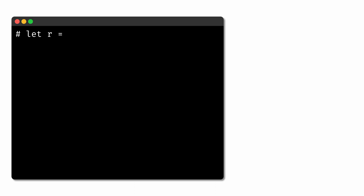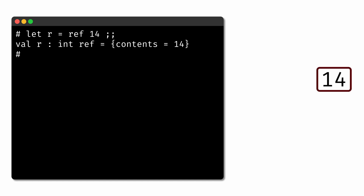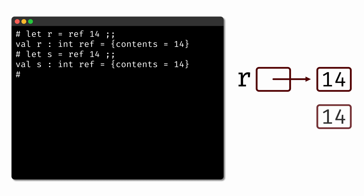For example, if we had a variable r that was a reference to the value 14, we could represent that visually by drawing a box representing some location in the computer's memory that stores the value 14, then a box representing the variable r which references or points to that box. Meanwhile, if we then defined another variable s as a reference to 14, we'd represent that as a new box storing 14 and a box for s pointing to it. Note that these are two different blocks of memory — r and s both point to different blocks, even though both store the integer 14.